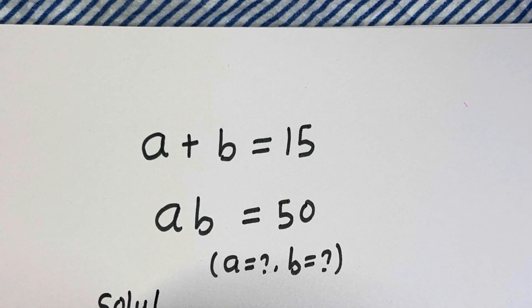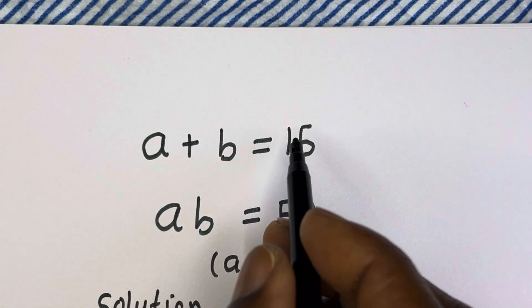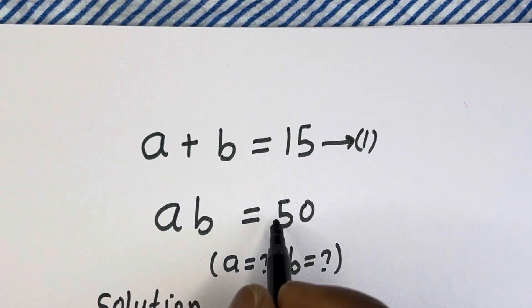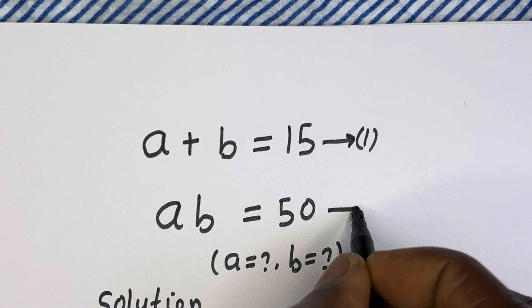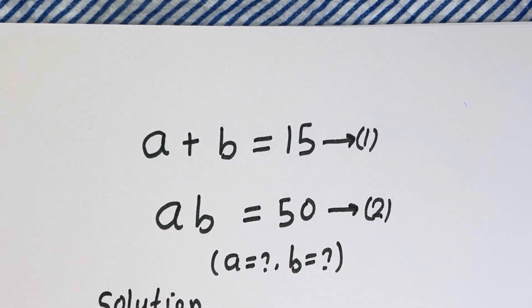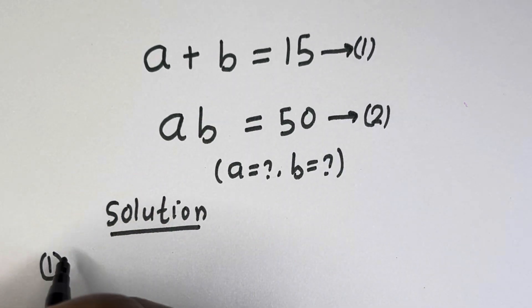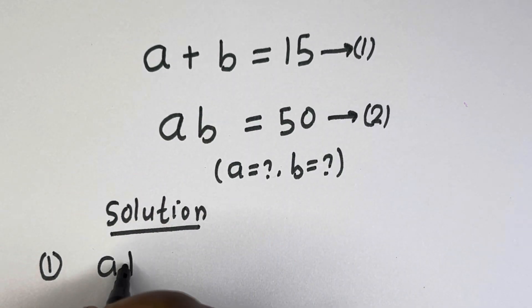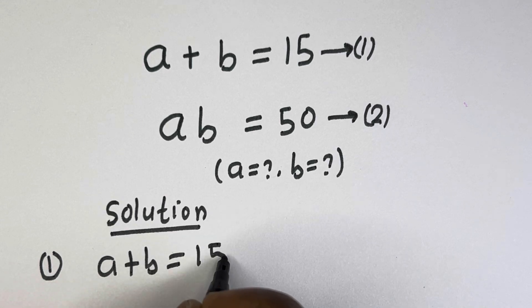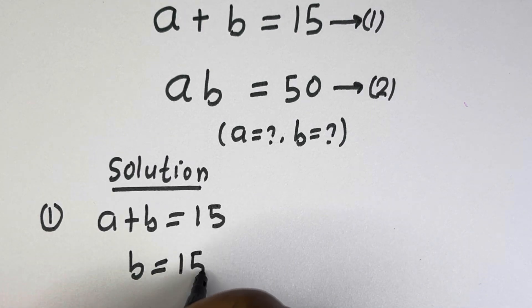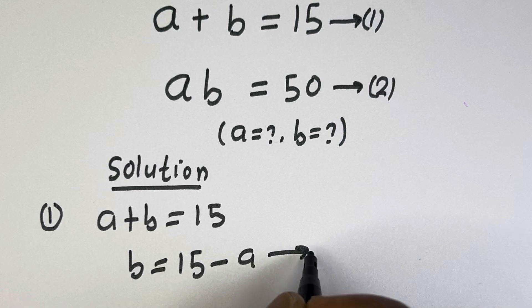Solution: A plus B is equal to 15 — let us call this equation 1. A times B is equal to 50 — let us call this equation 2. From equation 1, we have A plus B equals 15, therefore B is equal to 15 minus A. Let us call this equation 3.